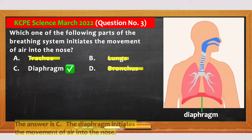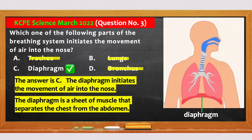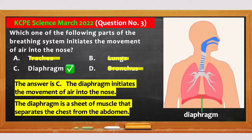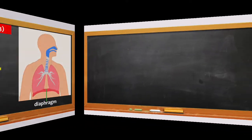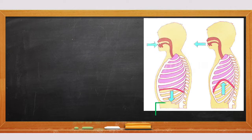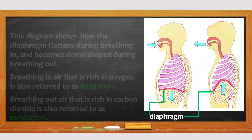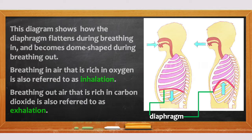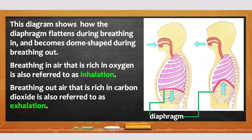The answer is C. It is the diaphragm that initiates the movement of air from the atmosphere and into the nose. The diaphragm is a sheet of muscle that separates the chest from the abdomen. This diagram shows how the diaphragm flattens during breathing in, and becomes dome-shaped during breathing out. Breathing in air that is rich in oxygen is also referred to as inhalation. Breathing out air that is rich in carbon dioxide is also referred to as exhalation.